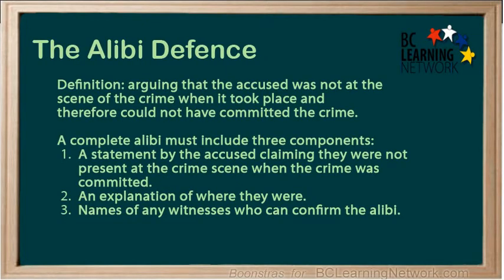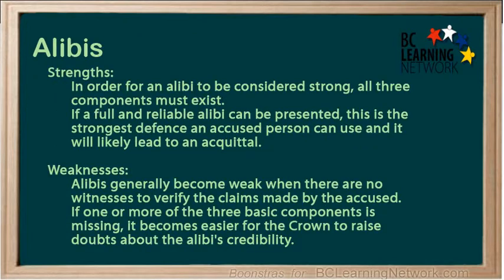The alibi defense argues that the accused was not at the scene of the crime when it took place and therefore could not have committed the crime. A complete alibi must include three components: a statement by the accused claiming they were not present at the crime scene, an explanation of where they were, and names of any witnesses who can confirm the alibi. All three components must exist for an alibi to be considered strong.